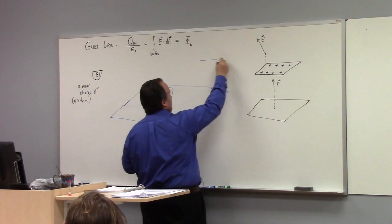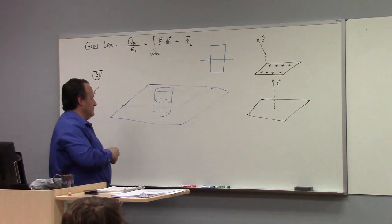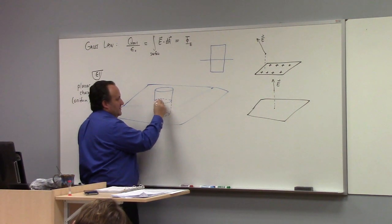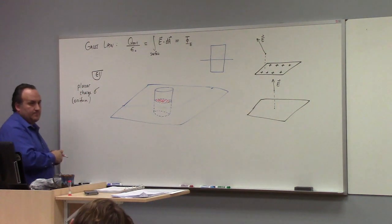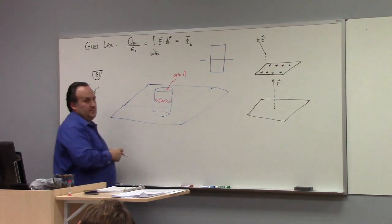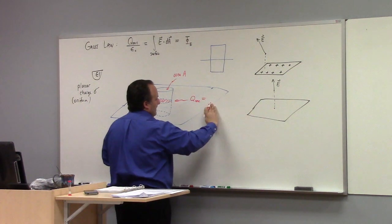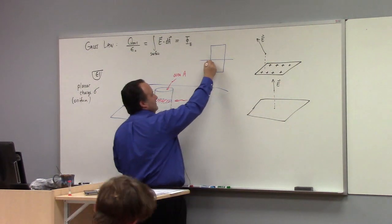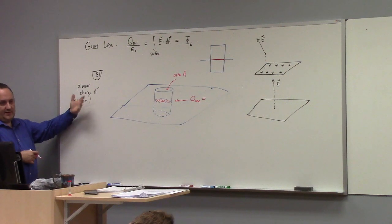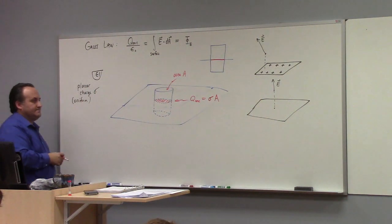Let me draw a dead-on picture so you can see it more clearly. The cylinder looks like this. Where is the charge? What's the charge enclosed by the cylinder? It's just where the cylinder cuts through the plane. So if this has area A, then the charge enclosed would just be sigma times A. That would be the charge enclosed.